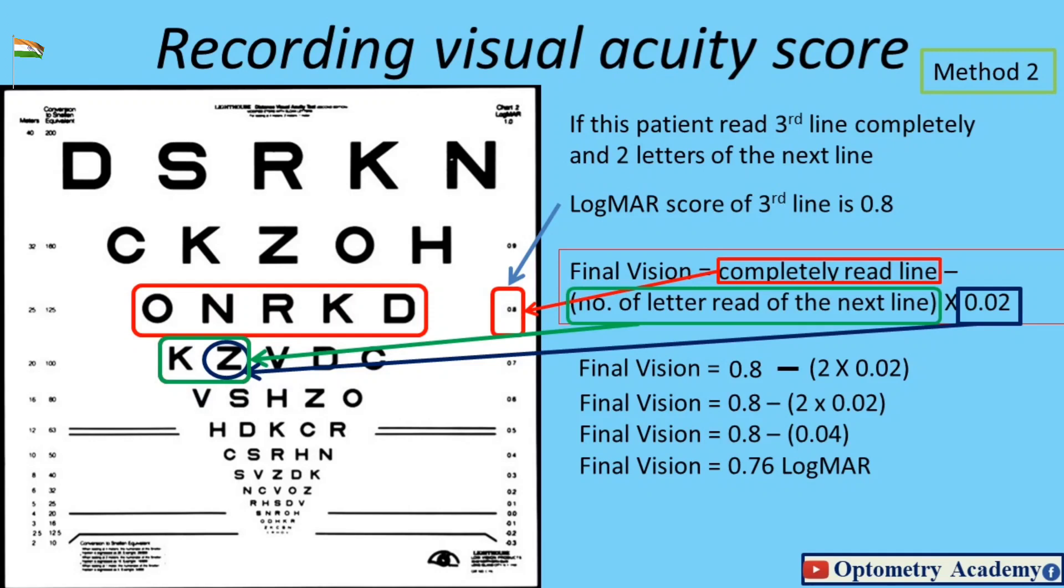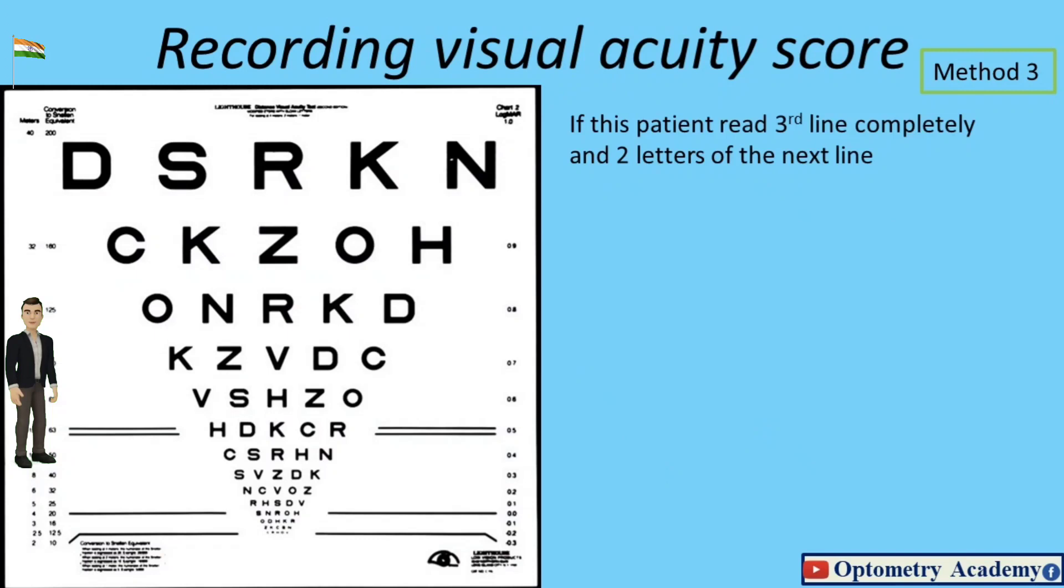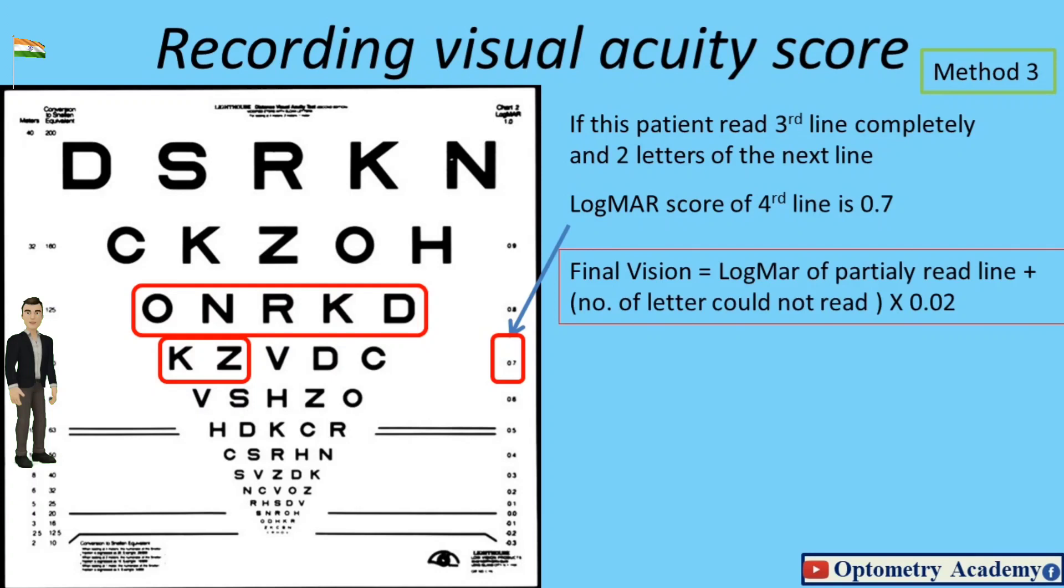Method 3: If this patient read third line completely and two letters of the next line, LogMAR score of fourth line is 0.7. Final vision equals LogMAR of partially read line plus number of letters could not read by the patient, multiplied by 0.02.